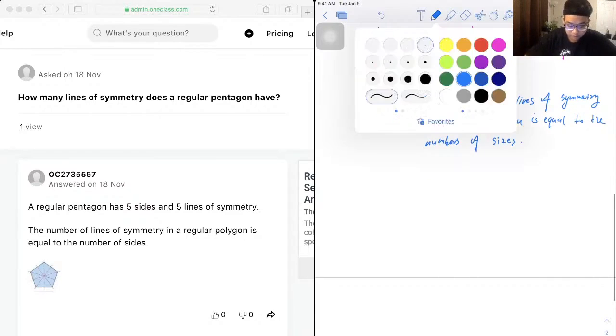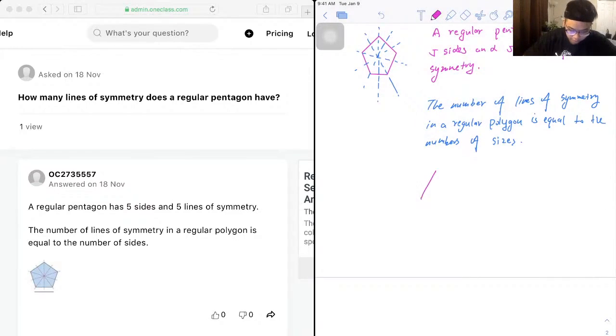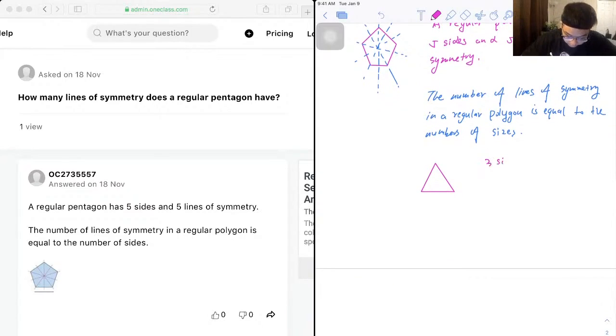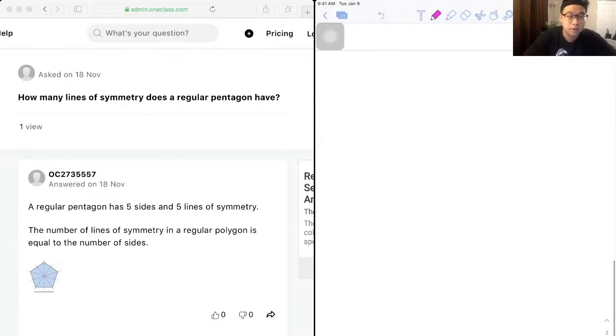So another example could be triangle. For a triangle we know that there are three sides and also three lines of symmetry, so that's one, two, and three. So that's all we got for this question.